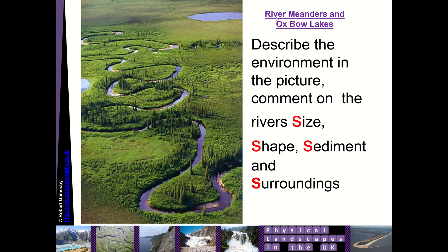Hello, this video is all about river meanders and how they develop over time into Oxbow Lakes. You've got a brilliant photograph here from Canada. You can see the river winding its way through a really broad, flat floodplain.